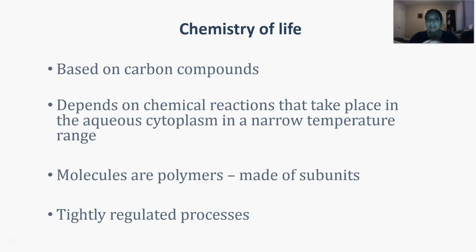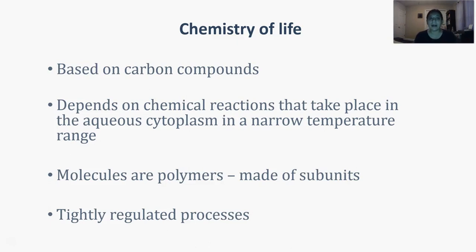A lot of our life is based on carbon compounds, so it is a basic requirement for a living thing. Their survival is dependent upon all these chemical reactions taking place inside cells to maintain metabolism, provide energy, and all the good stuff. The molecules inside these cells are basically polymers — polymers have a smaller subunit that is repeated multiple times to create a larger molecule that can actually perform work. All these chemical reactions and how much of each polymer or molecule is present is very tightly regulated inside the cell.